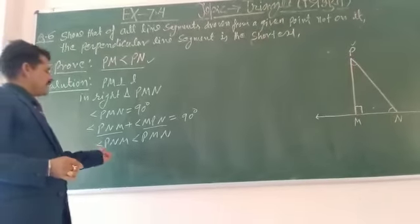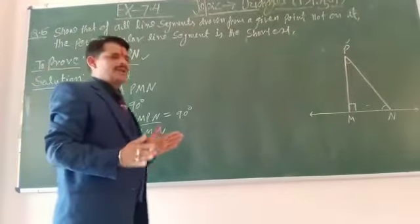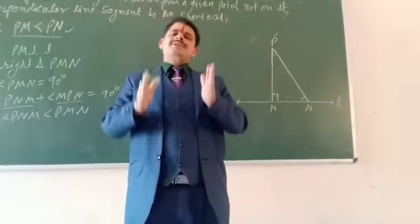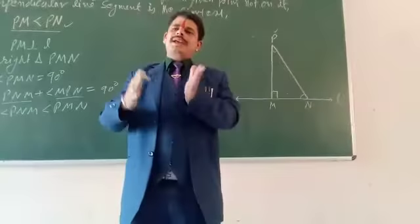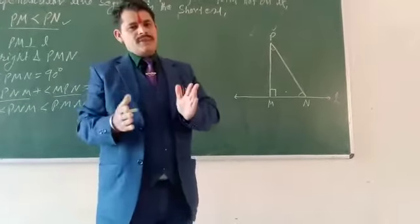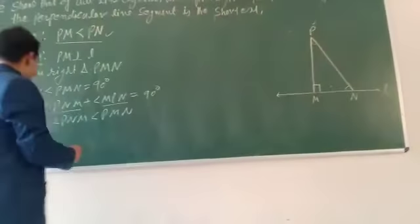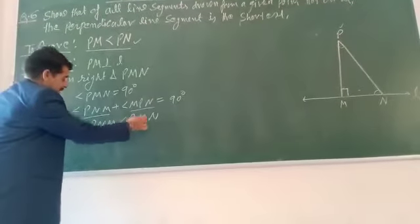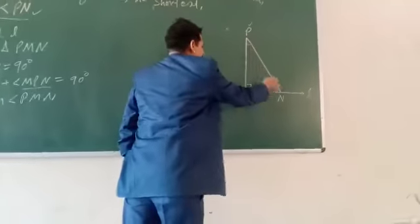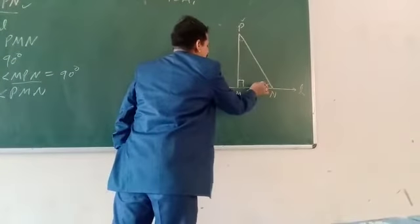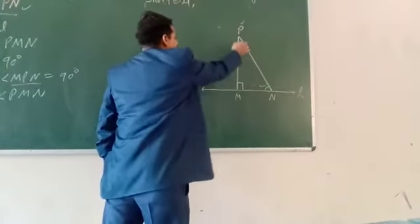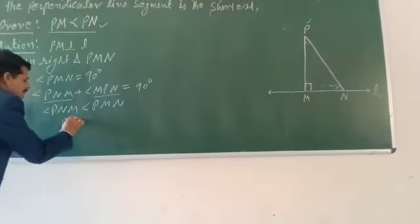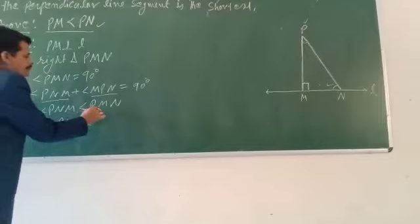We have learned that when the angle is bigger, the opposite side is bigger. The angle is smaller, so here angle PNM is smaller than PMN. The side opposite to the smaller angle is smaller, so PM is less than PN.